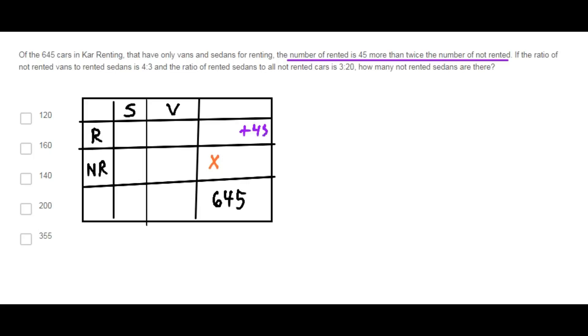Rented is 45 more than twice the number of not rented. As you can see, the sum of rented and not rented cars is the total number of cars. So, 3 times x plus 45 is 645.